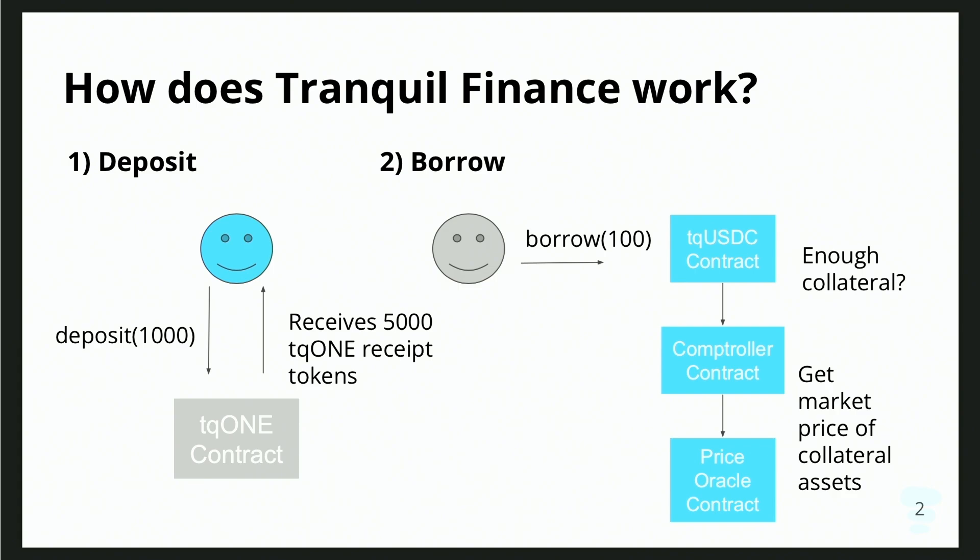Likewise for borrowing — to borrow, you first deposit your collateral, but the borrow decision isn't made by anyone. It's made completely by code in the smart contract. Say you deposit ONE and want to borrow USDC to take a long position. When you do the borrow, the smart contract calls another smart contract to check if you're allowed to borrow — whether you have enough liquidity. That smart contract is called the comptroller contract. In a normal bank, someone would look at your credit report; in the blockchain world, this entire logic is stored in the comptroller contract.